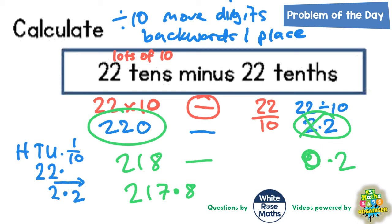because 217.8 plus the extra 0.2 would get you back up to 218. So, the final answer, 22 tens minus 22 tenths is 217.8. You could also have written that as 217 and 8 tenths because 0.8 is the same as 8 tenths.